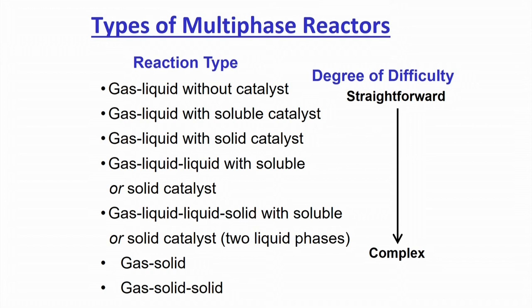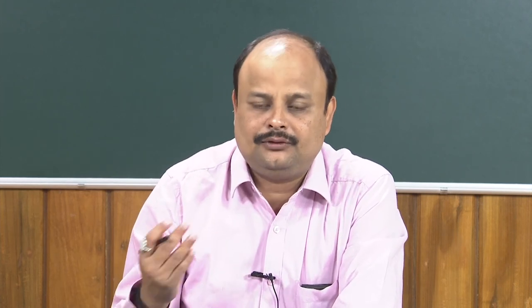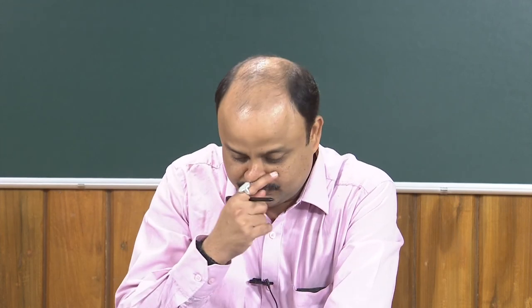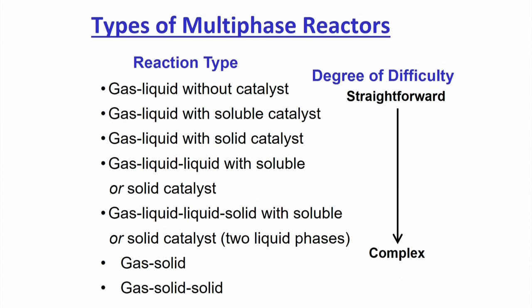Starting from simpler systems: there is a gas-liquid reactor without catalyst, then a gas-liquid reactor with a homogeneous catalyst soluble in one of the phases, then gas-liquid with solid catalyst inside — making a three-phase slurry column. Then gas-liquid-liquid with soluble or insoluble or solid catalyst, where the number of phases increases to one gas, two liquid phases, and one solid catalyst. Most complicated are gas-solid or gas-solid-solid systems.